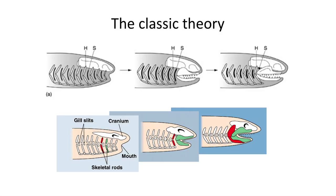Early paleontologists viewed the origin of jaws as developing out of modified gill arches. The theory held that the first gill arches developed into the floor of the brain case, the second gill arch formed into the palatoquadrate of the upper jaw, and Meckel's cartilage formed the mandible or lower jaw. Then the third gill arch formed the hyomandibular and ceratohyal in the lower jaw and throat.